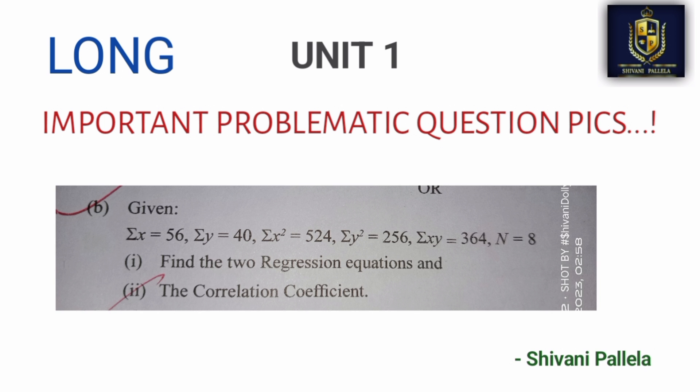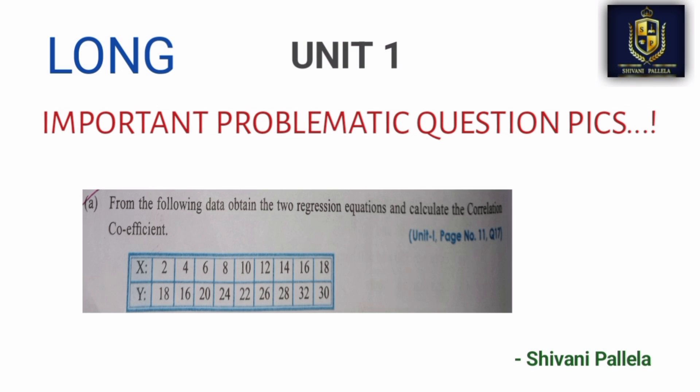Let's look at this question. From the following data, obtain the 2 regression equations — x on y and y on x. Then we calculate x, x-squared, and x·y values. This is a problematic question type.